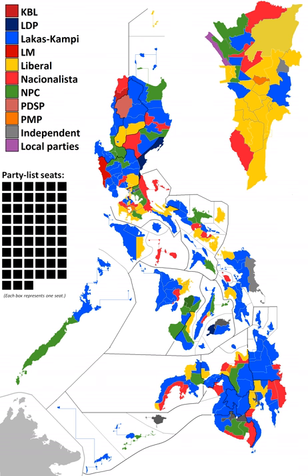Negros Occidental 5th, June 2, 2012 — Ignacio Arroyo of Negros Occidental's 5th District died. Binalbagan Mayor Alejandro Mirasol beat Emilio Yulo III at the special election.